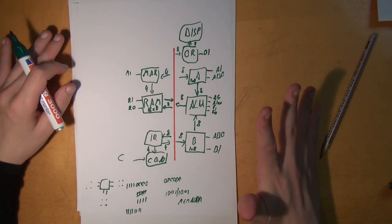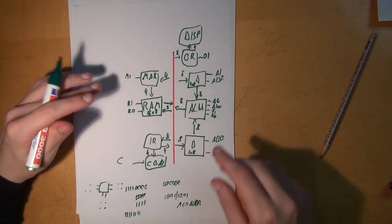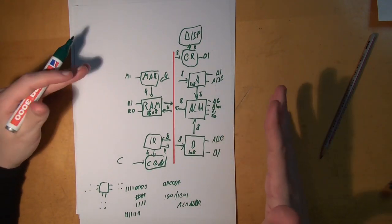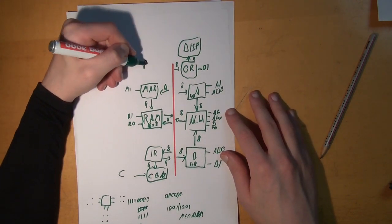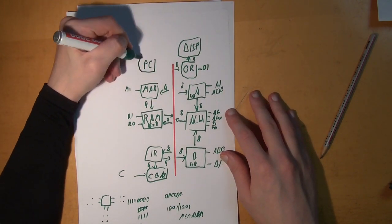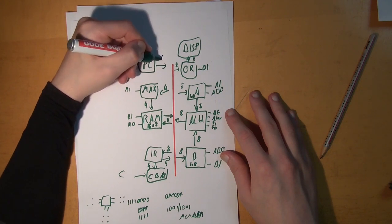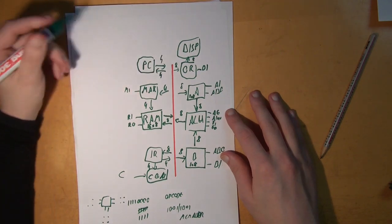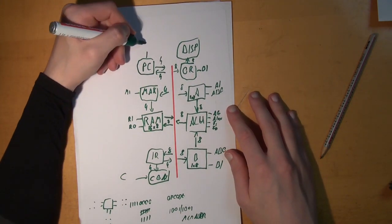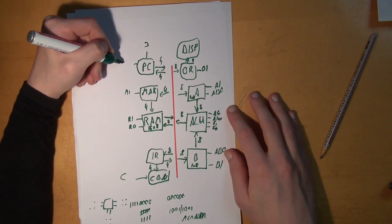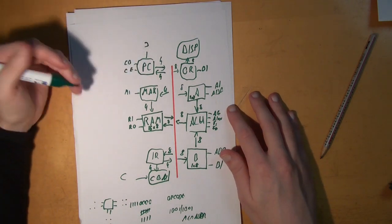We just need one more thing to complete our computer, and then I'll let a simple program run through this schematic. We need something called a program counter — also called an instruction address register. It has three control bits: one called jump, one called counter out, and one to increment the counter.